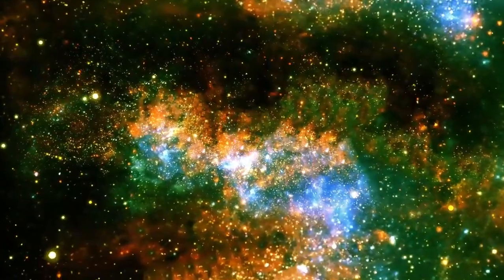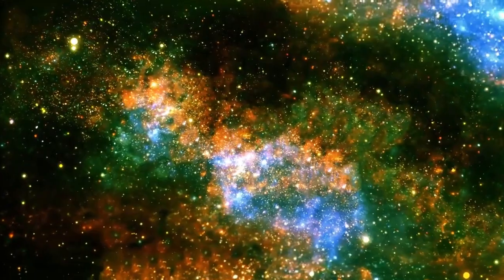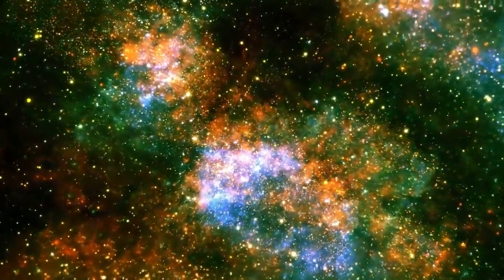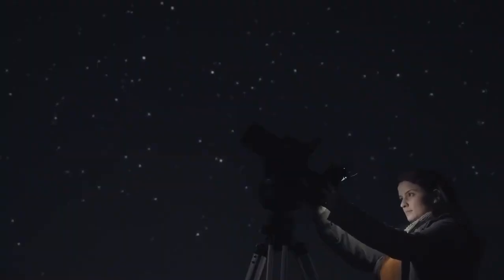Webb had revealed a collection of ancient galaxies, some of them potentially some of the very first ever created. These galaxies were tiny, compact, and softly glowing with the redshifted light of over 13.5 billion years.